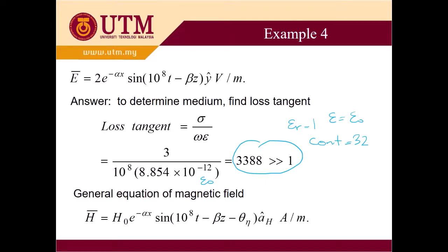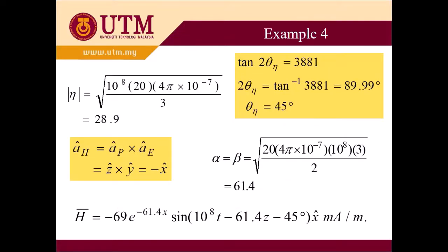And we have to write down the general equation of magnetic field. We know that in conductors, the difference is only we have the phase delay of theta_n. And we also know what is theta_n. Theta_n is 45 degrees. This is what we know. And let's prove it. And we also have this attenuation component. And H_0 also can be determined.